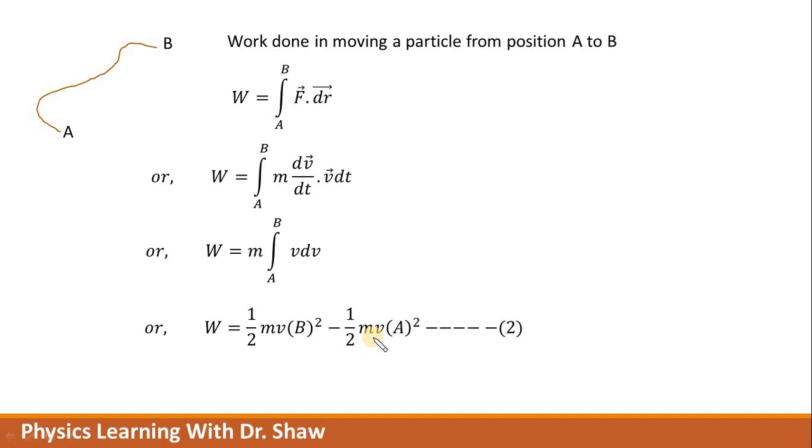And what is half m v squared? Half m v squared is nothing but the kinetic energy. So work done is the difference between the kinetic energy at final position minus initial position. This is also known as the work-energy theorem.